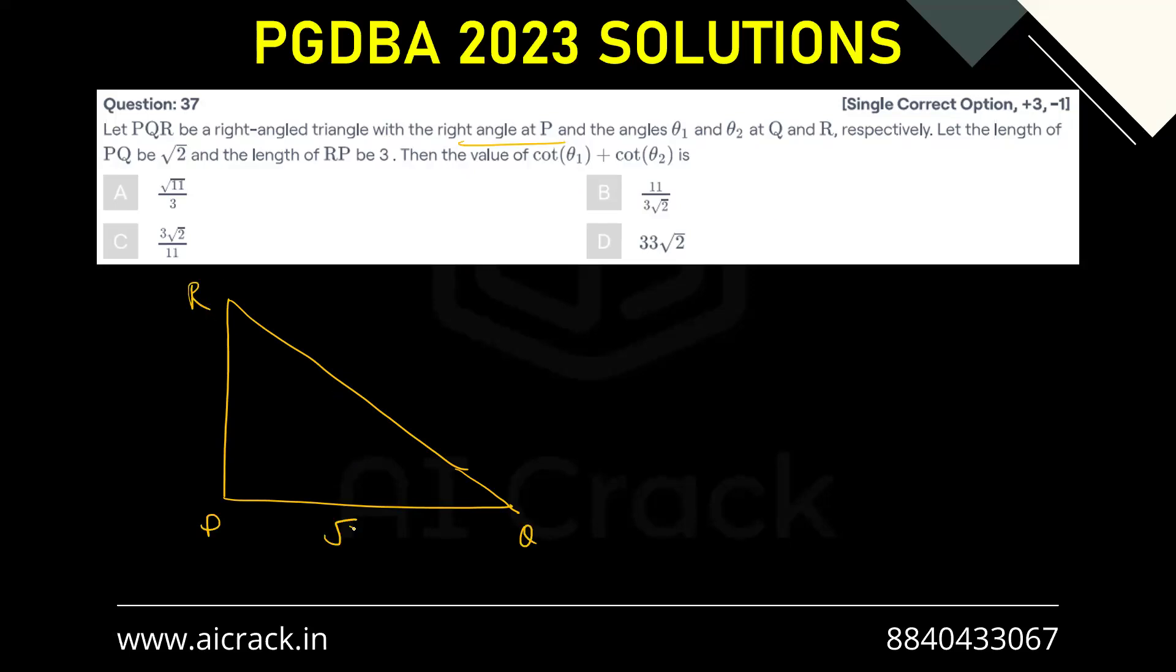So PQ is √2 and PR is 3, and we have θ₁ at Q and θ₂ at R. We have to calculate cot(θ₁) + cot(θ₂).